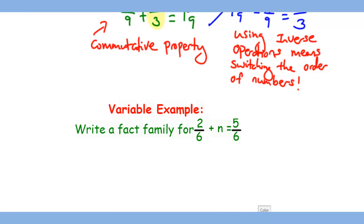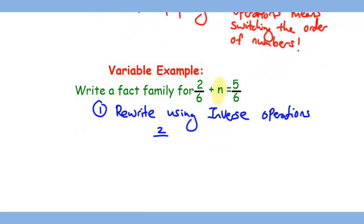Now let's try a variable example, which is using the fact family to solve the equation 2/6 + n = 5/6. We can rewrite this question using inverse operations: 2/6 + n = 5/6.